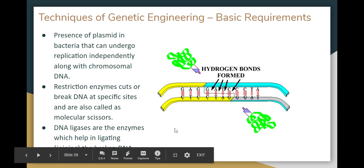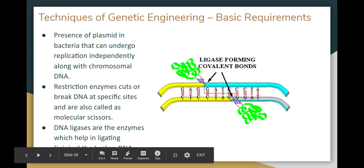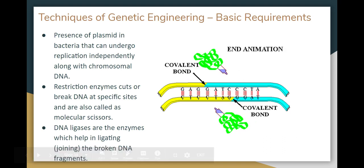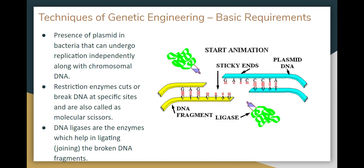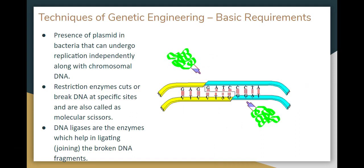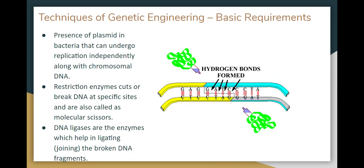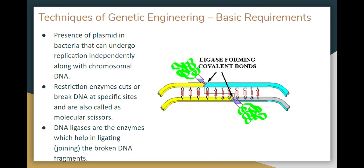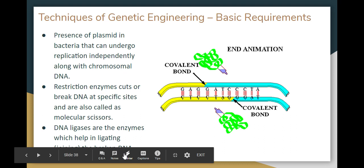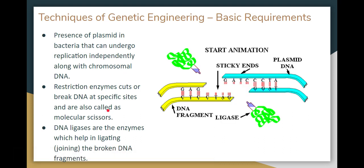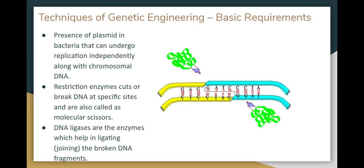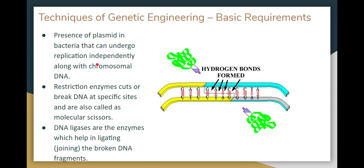The techniques of genetic engineering have three basic requirements. In the first technique, we look at the bacterial cell and the double-stranded plasmid, which can replicate independently. The second technique involves the restriction enzyme, which is used to break DNA at specific sites — this is called the molecular scissor.